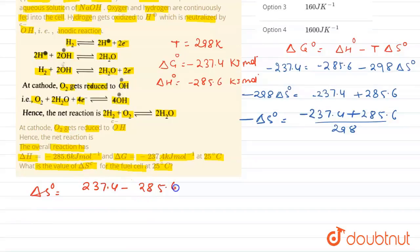This equals -48.2/298 kJ/K. But all options are in J/K, so ΔS° = (-48.2/298) × 10³ J/K.